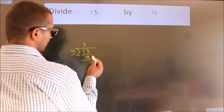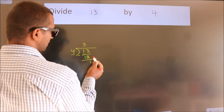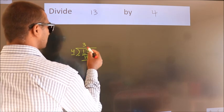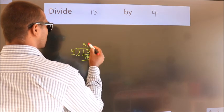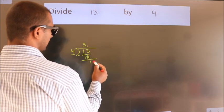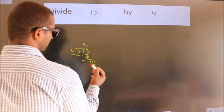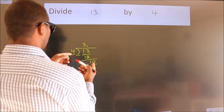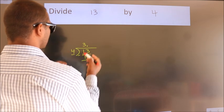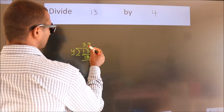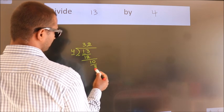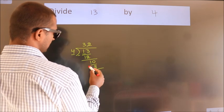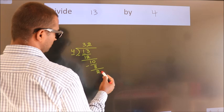After this, there are no more numbers to bring down. So what we do is put a dot and take 0, making it 10. A number close to 10 in the 4 times table is 4 twos, which is 8. Now we subtract and we get 2.